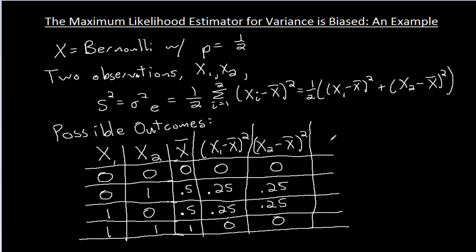Okay, so s squared, the estimated variance, let me rewrite it here. s squared, the estimated variance is one-half times the sum of these. So I have one-half times zero, zero. One-half times 0.25 plus 0.25 is one-half times 0.5, that's 0.25, etc. Okay, let me scroll down here.